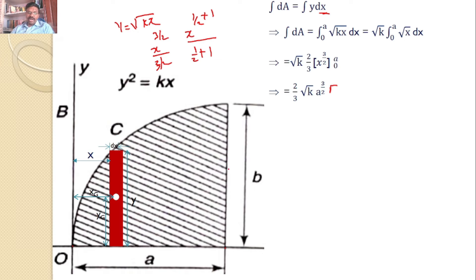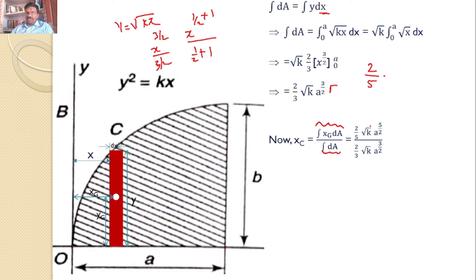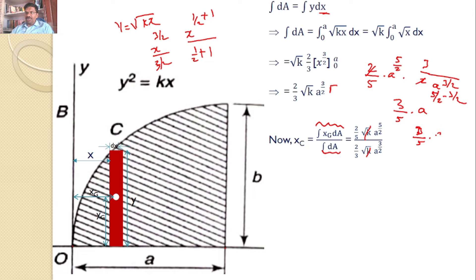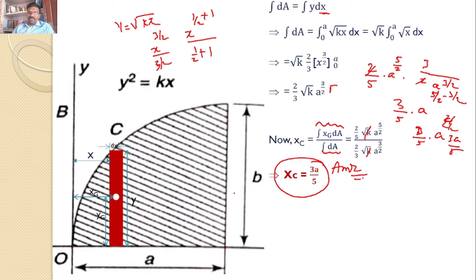The x-coordinate of the centroid: x_c = ∫x_g·dA / ∫dA = [(2/5)·√k·a^(5/2)] / [(2/3)·√k·a^(3/2)]. The √k terms cancel, giving (2/5) · (3/2) · a^(5/2 − 3/2) = (3/5)·a. Hence, x_c = 3a/5. This is the x-coordinate of the centroid for the given area.